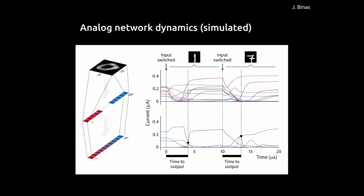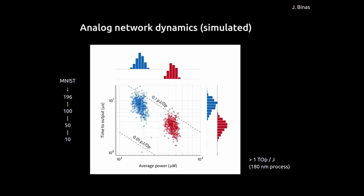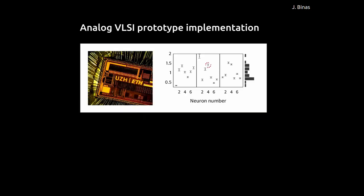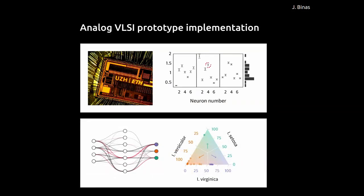This can lead to quite efficient implementations. Even though we use a very old fabrication process — 180 nanometers, state of the art about two decades ago — we get efficiency numbers comparable to what people see in state-of-the-art digital systems. We also built a tiny prototype chip to show that this works in real life, classifying the iris dataset. Not very impressive, but it does work.